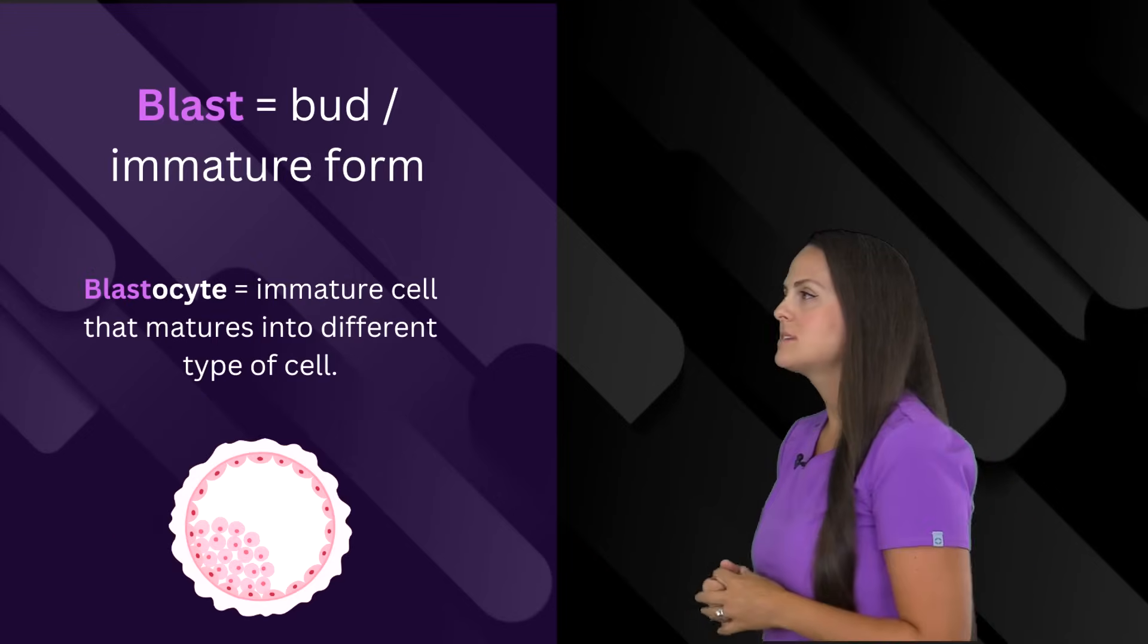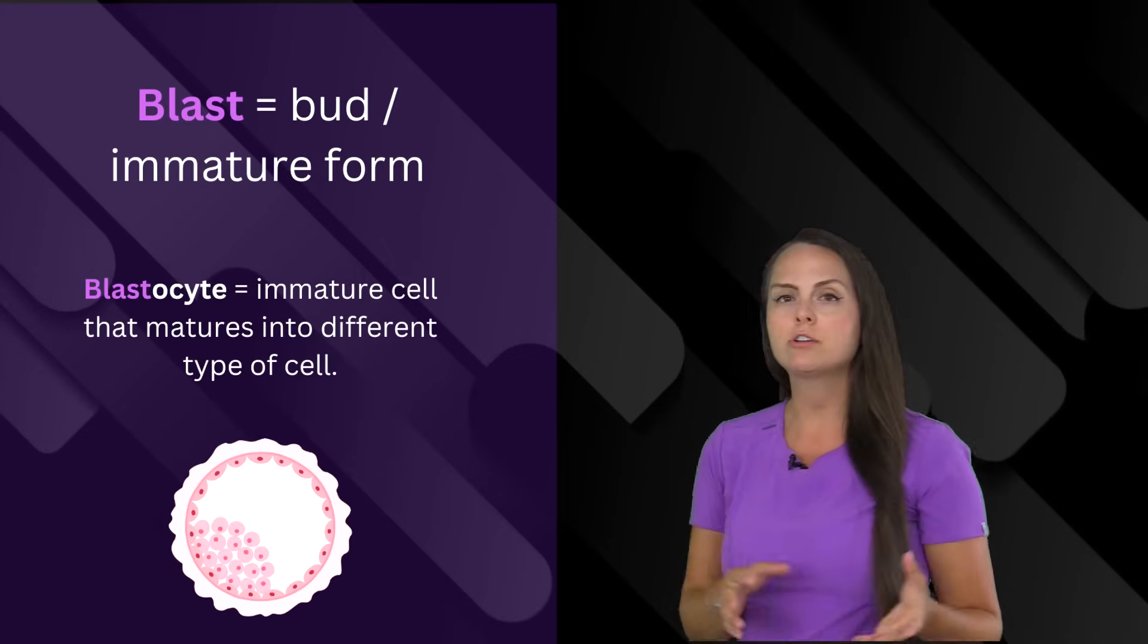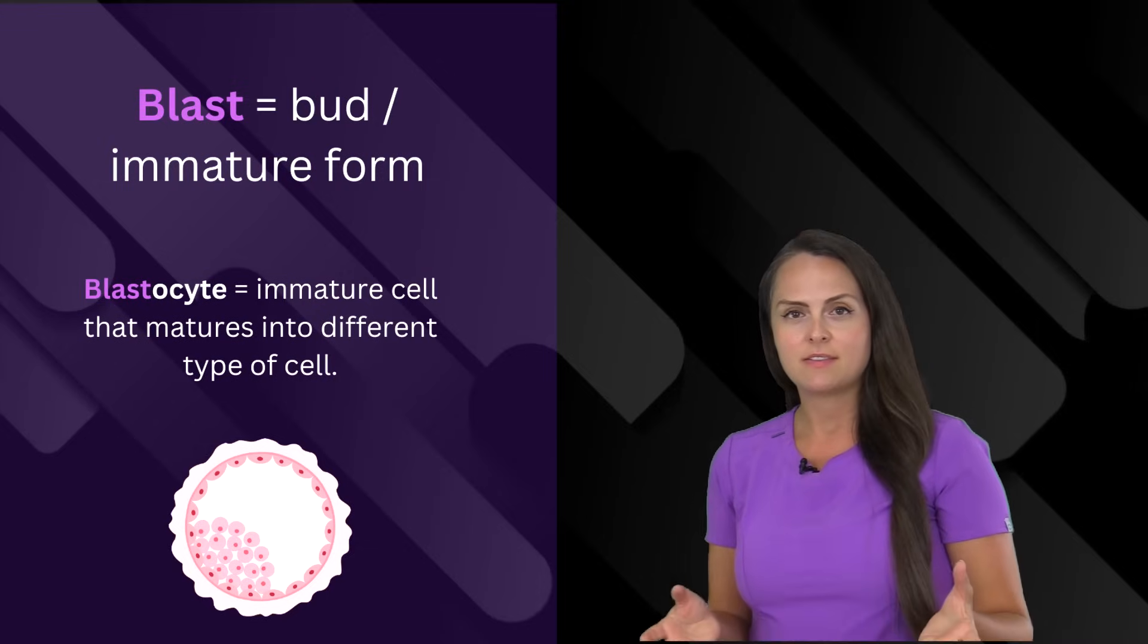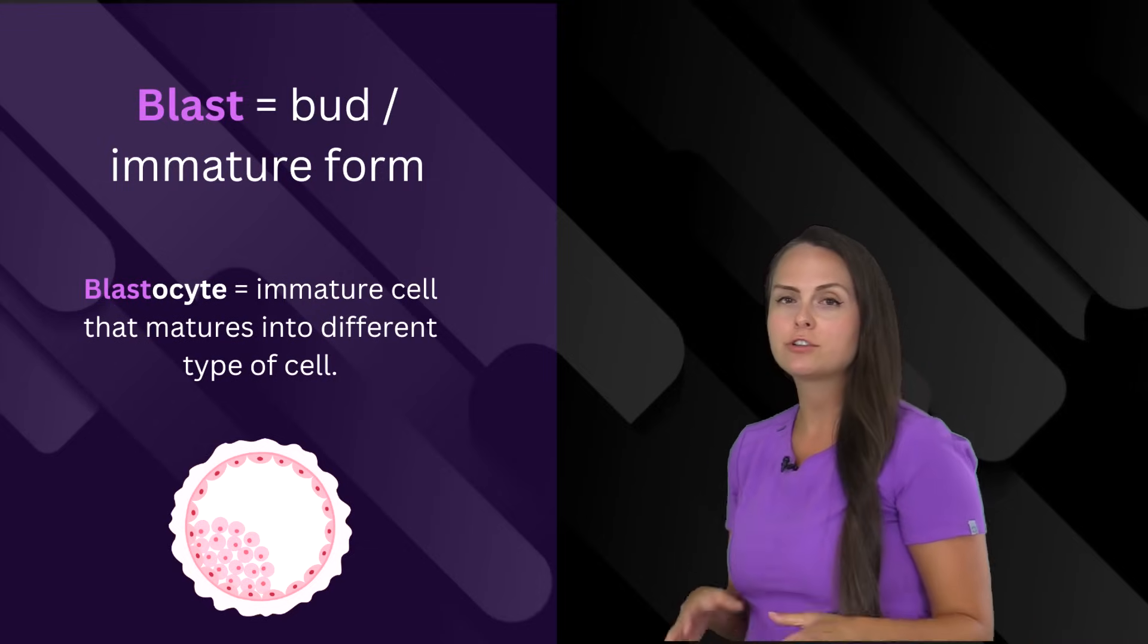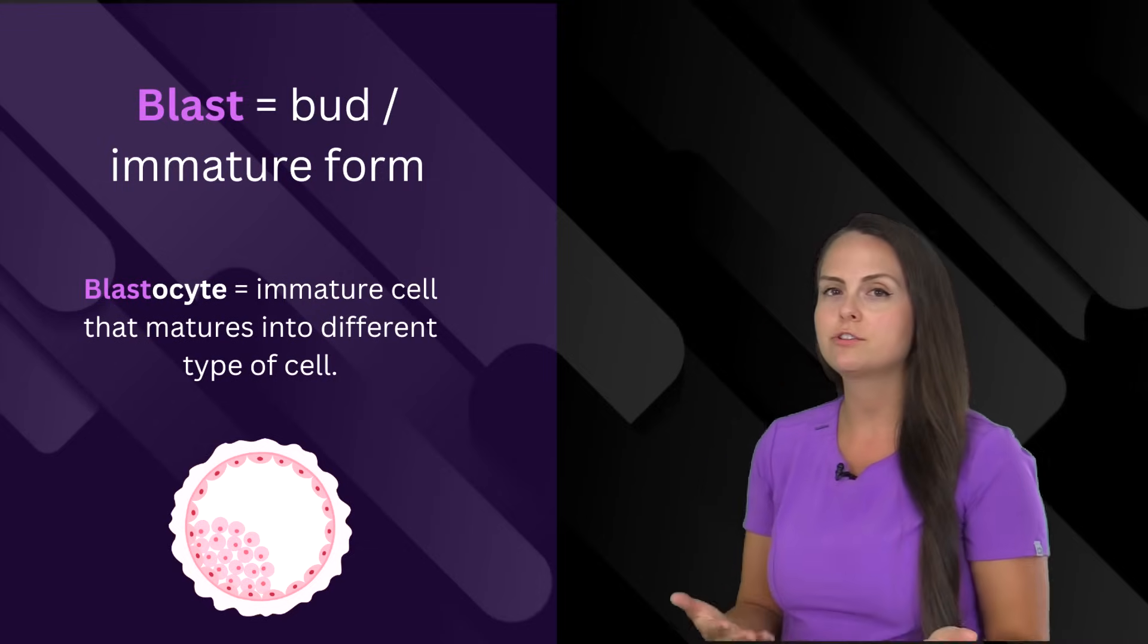And then there's blast, which means bud or an immature form of something. So when I say blastocyte, that means I'm talking about an immature cell that will eventually mature.